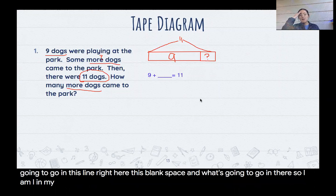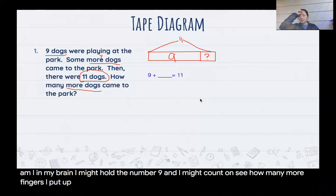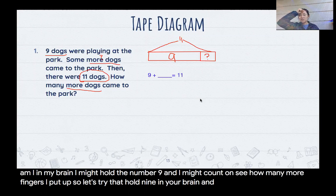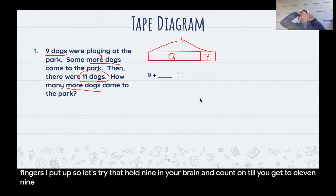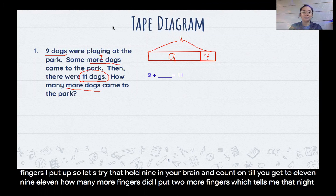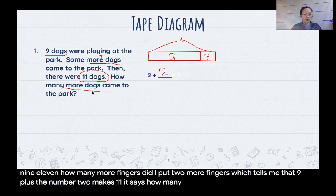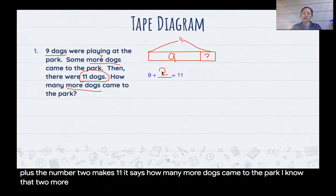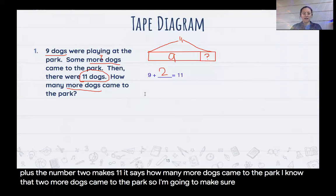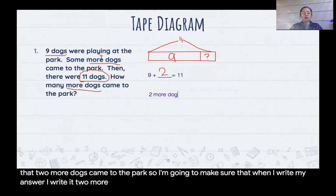So I'm going to figure out what is going to go in this blank space. So I might, in my brain, I might hold the number nine, and I might count on and see how many more fingers I put up. So let's try that. Hold nine in your brain and count on until you get to 11. Nine, 10, 11. How many more fingers did I put up? Two more fingers, which tells me that nine plus the number two makes 11. How many more dogs came to the park? I know that two more dogs came to the park. So I'm going to make sure that when I write my answer, I write it: two more dogs came to the park.